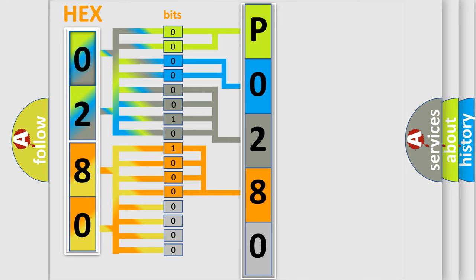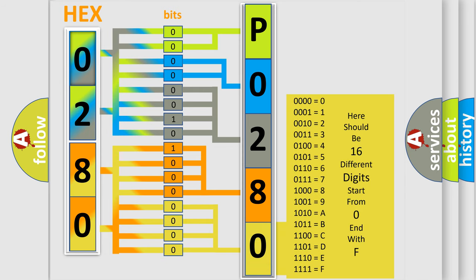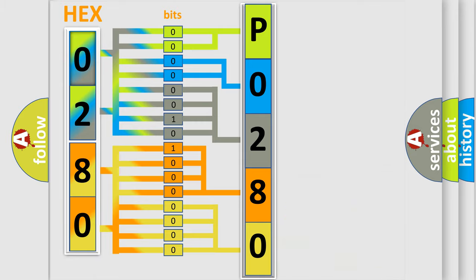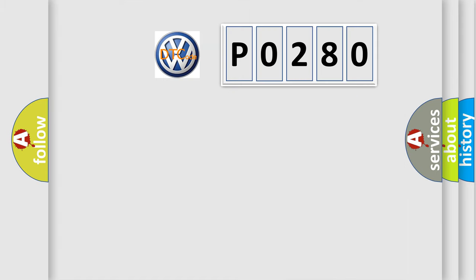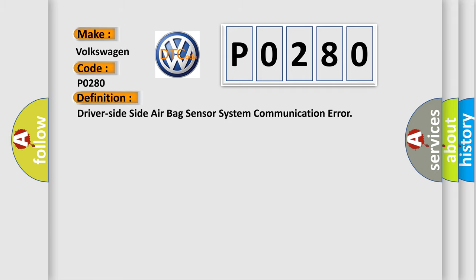A single byte conceals 256 possible combinations. We now know in what way the diagnostic tool translates the received information into a more comprehensible format. The number itself does not make sense to us if we cannot assign information about what it actually expresses. So, what does the diagnostic trouble code P0280 interpret specifically for Volkswagen car manufacturers? The basic definition is: driver-side side airbag sensor system communication error.